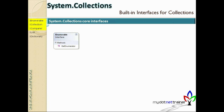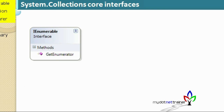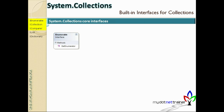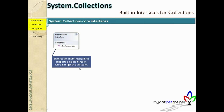The first interface is IEnumerable, which we already saw with the StringTokenizer. It has only one method called GetEnumerator. When we implement it, it asks for a class that implements IEnumerator. We used IEnumerable so a custom class could be used with a for-each statement. It supports simple iteration over a non-generic collection — we'll understand the generic vs non-generic difference when we cover generic collections.